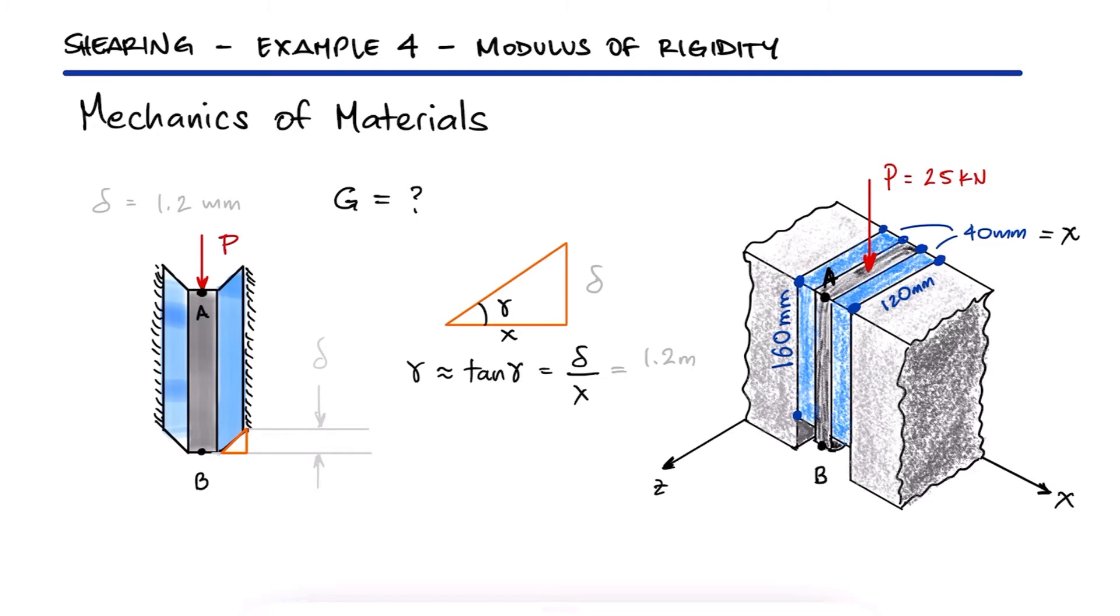With a vertical displacement of 1.2 mm and the 40 mm thickness of the rubber blocks, we find a shearing strain of 0.03.